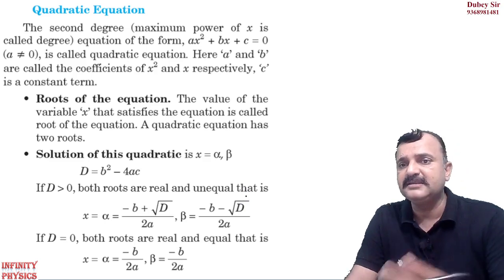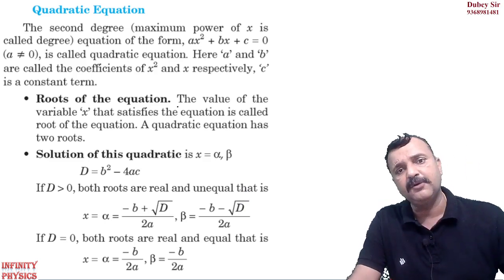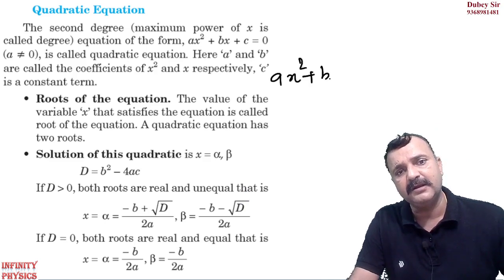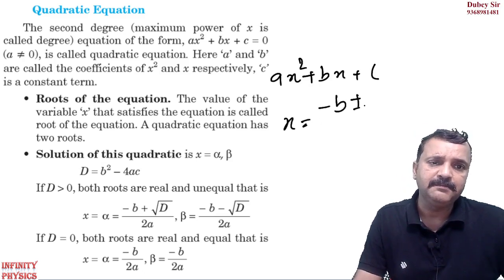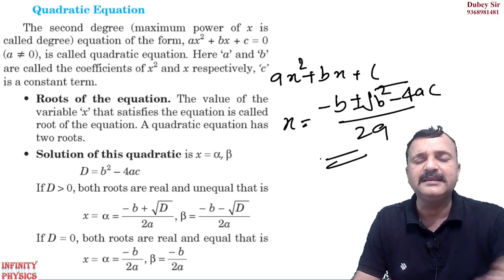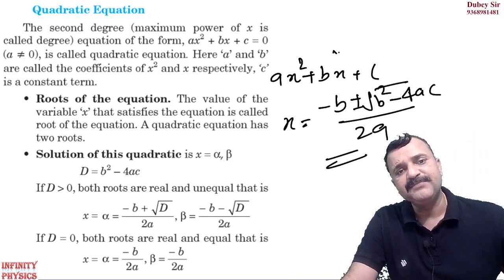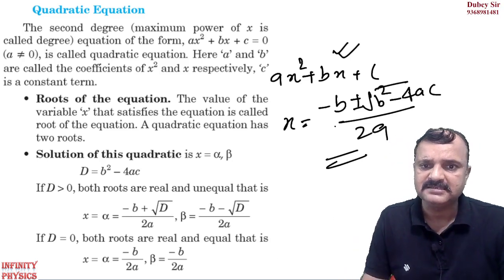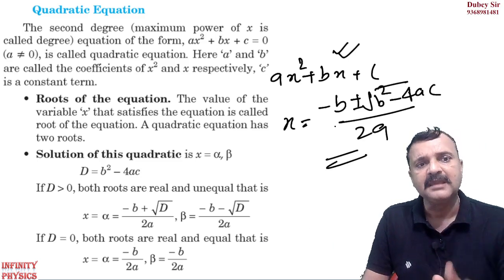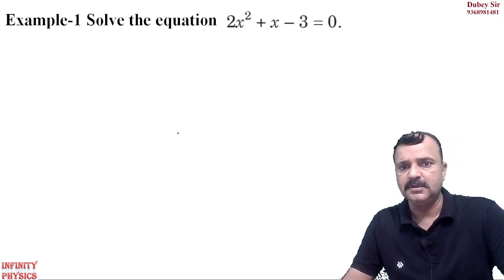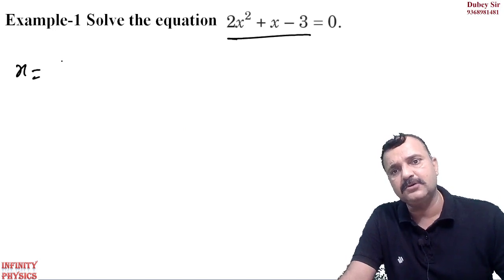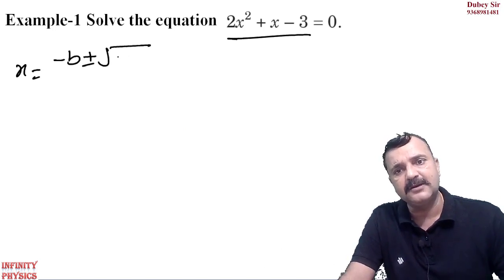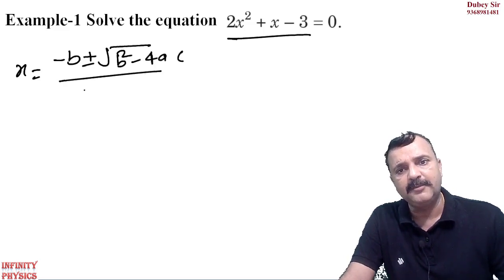The second is the quadratic equation, written in the form ax² + bx + c. You may have solved this in 8th class. To find x, the formula is: x = [−b ± √(b² − 4ac)] / 2a. Since it is x square, there will be two roots — one with plus and one with minus.